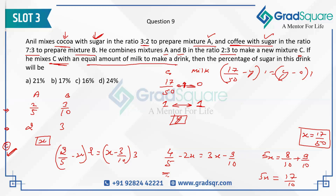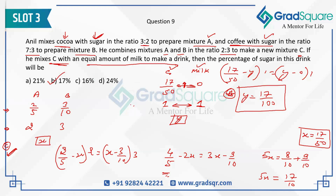Solving this equation gives the value of Y as 17/100. This means the final mixture of C and milk has a sugar strength of 17/100 — that is, 17 parts out of 100, which is 17%. So option B, 17%, is the answer.